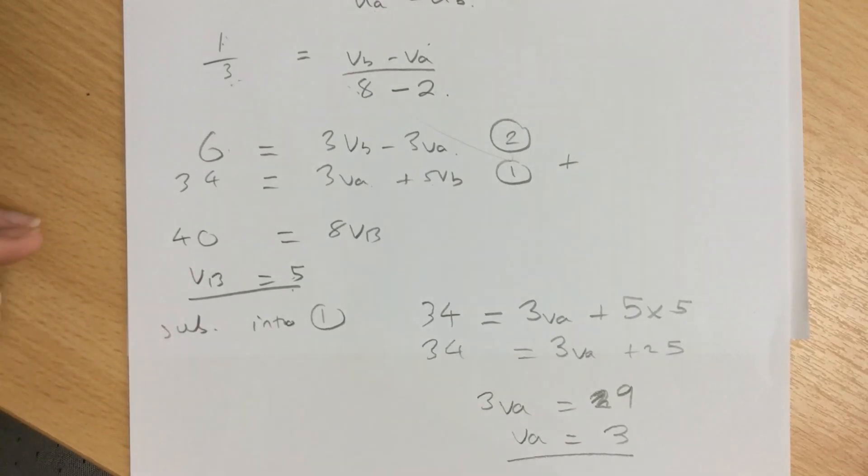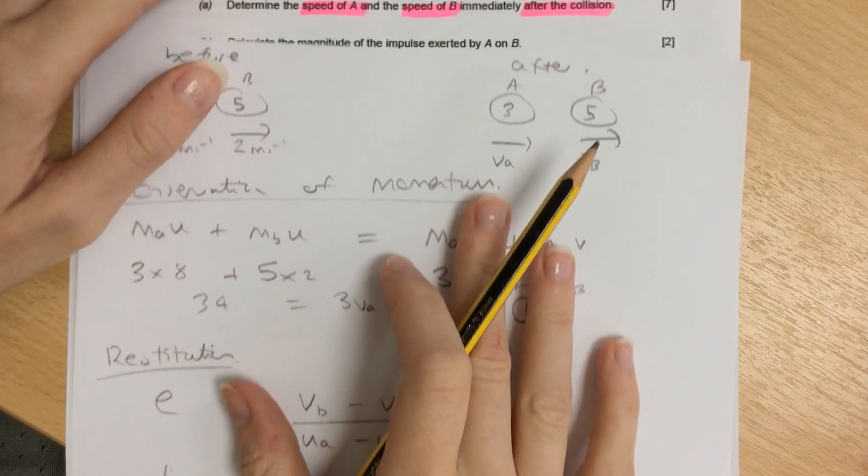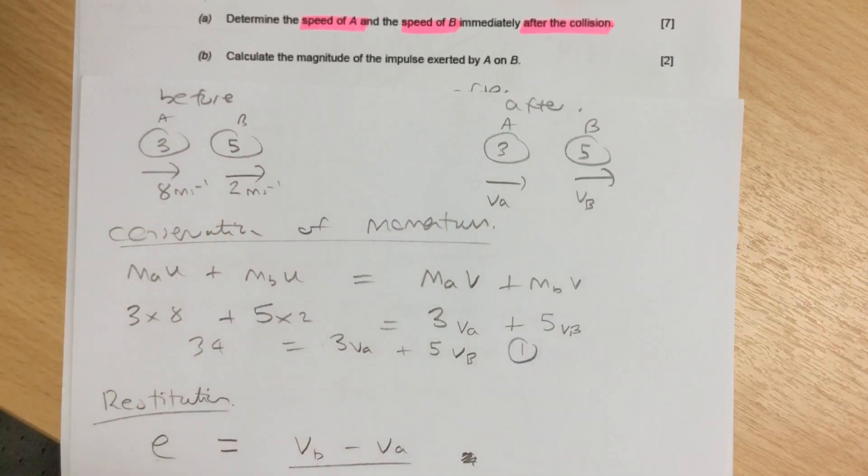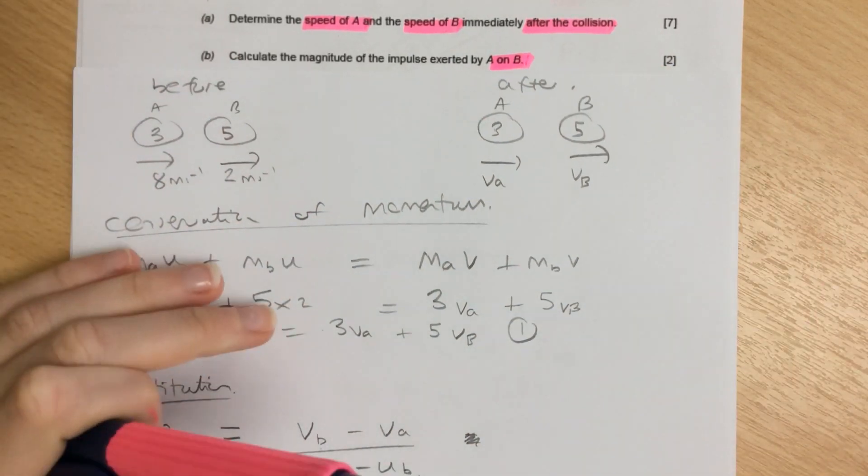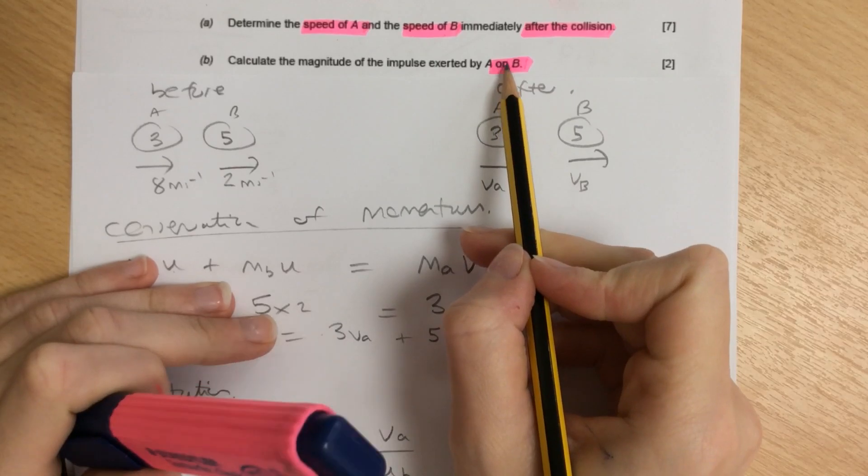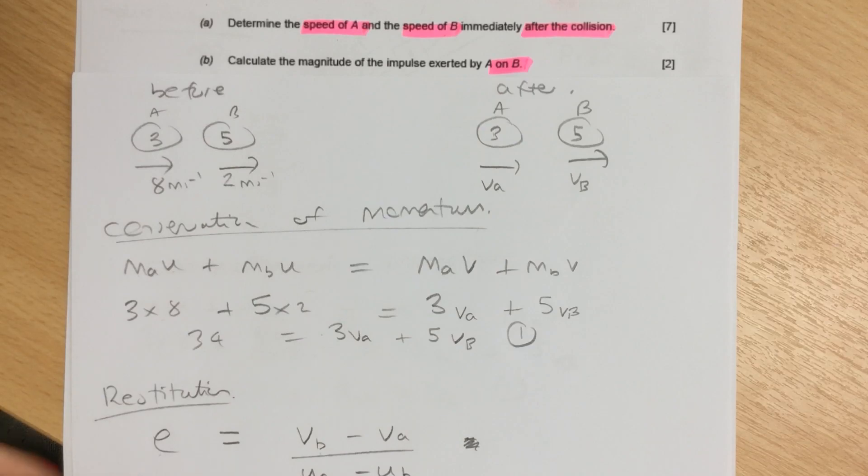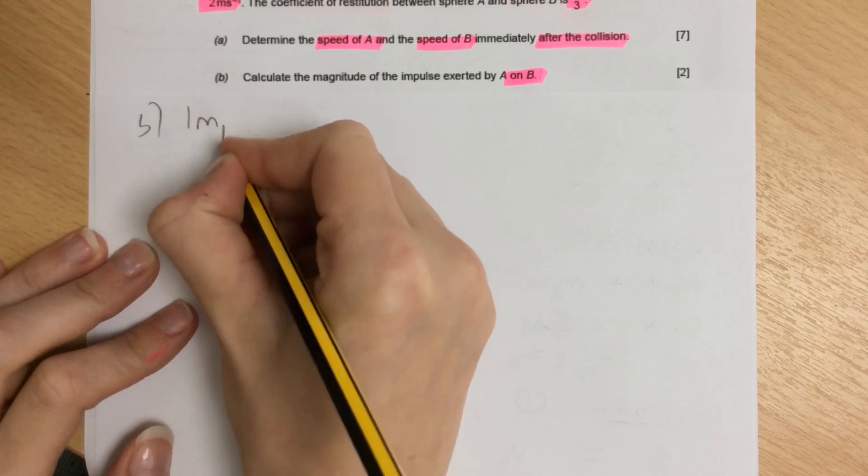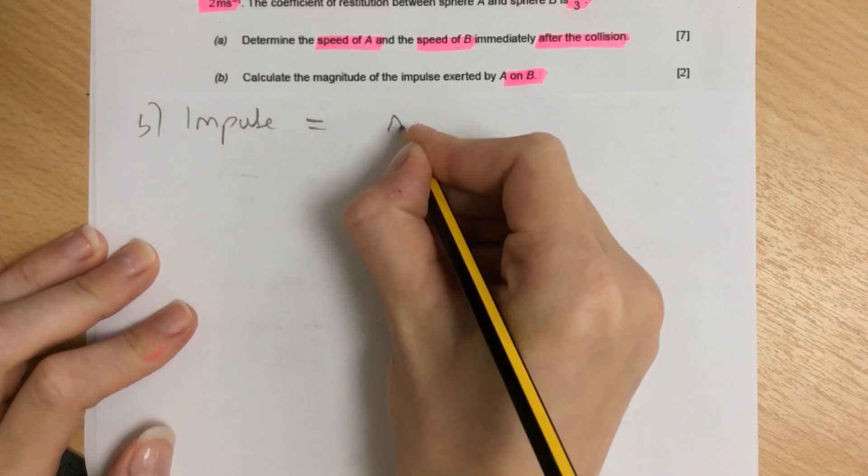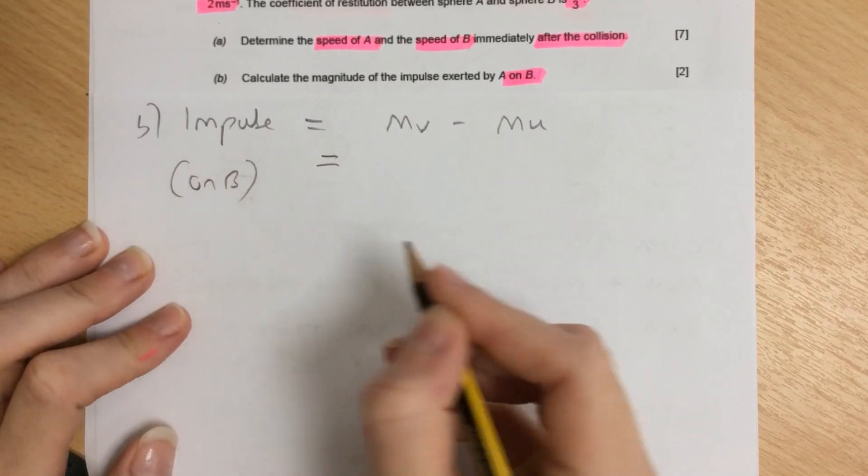Part B asks you to calculate the impulse exerted by A on B. With this question, it's important to notice it says on B, so we focus on object B. The formula for impulse is MV minus MU, and we're focusing on object B.